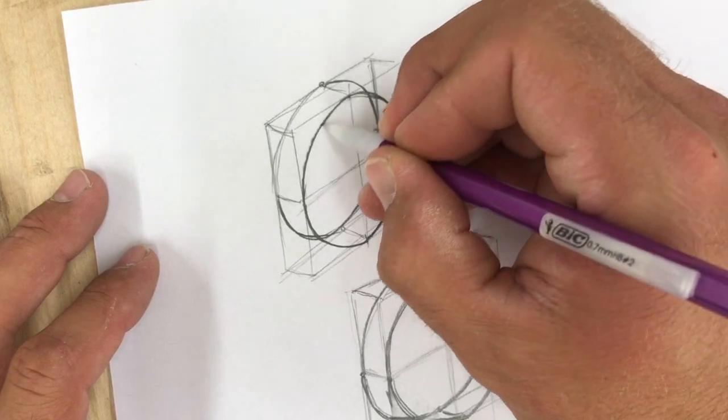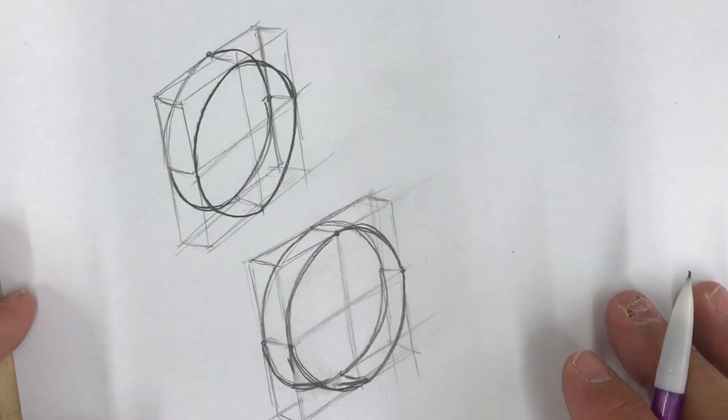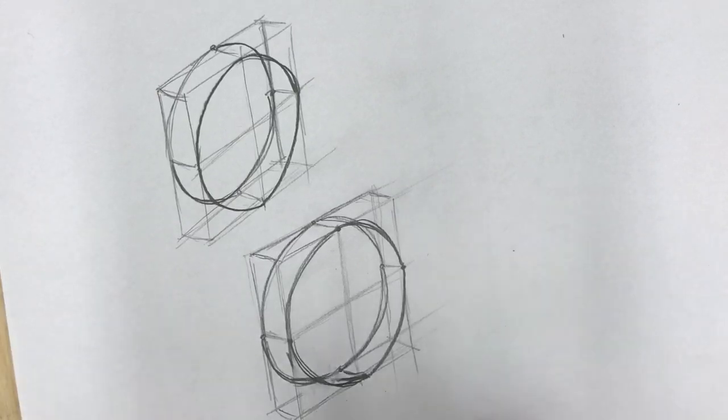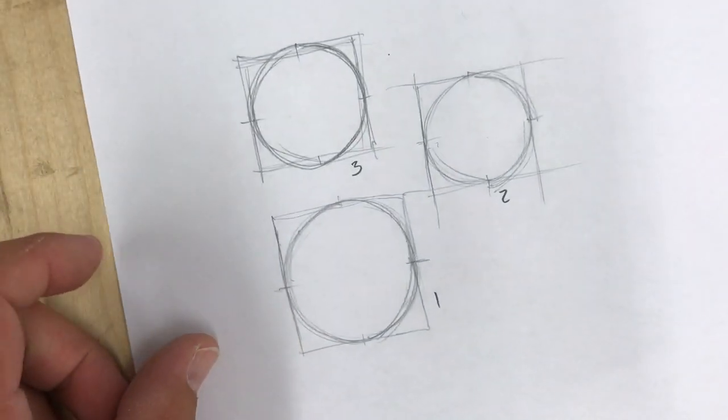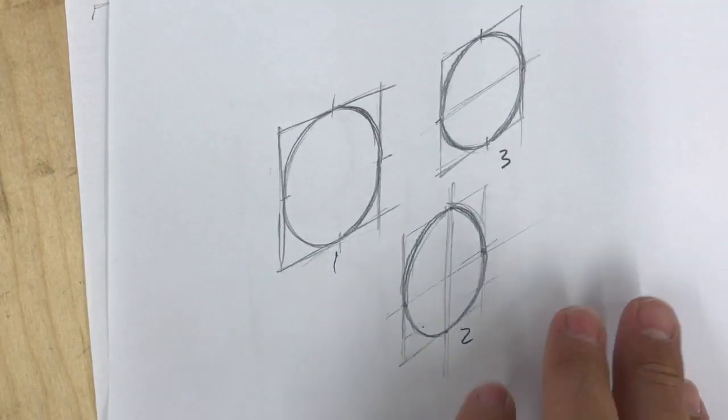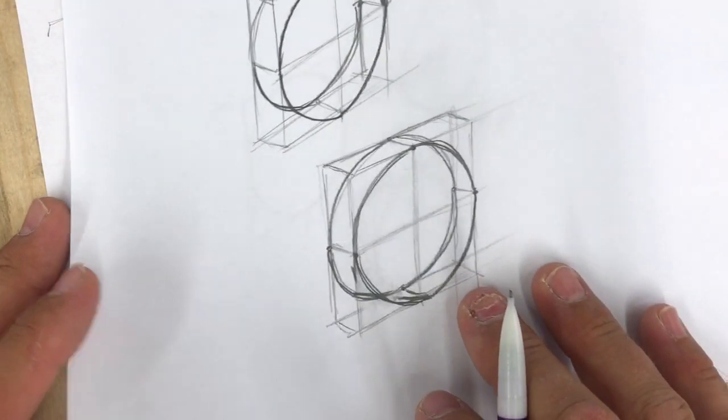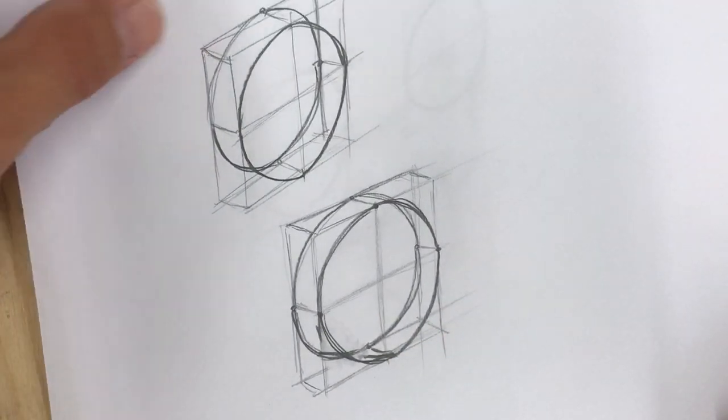Just like that, and there you go. So we started drawing circles in squares, moved it so we put those squares at an angle, and then we added two together.